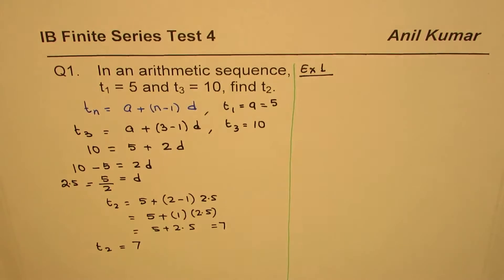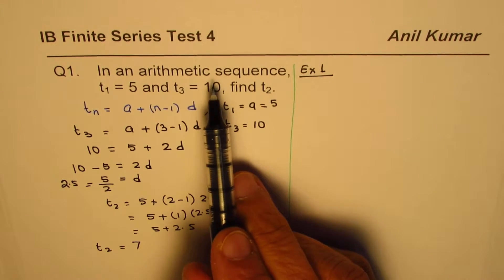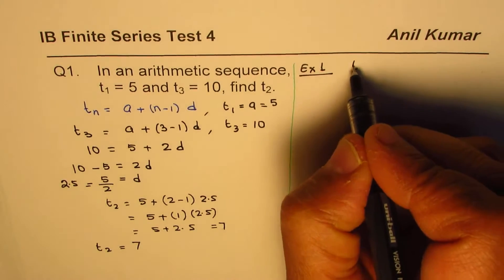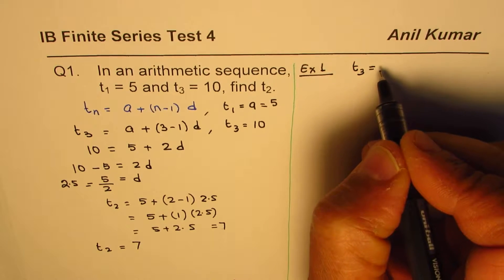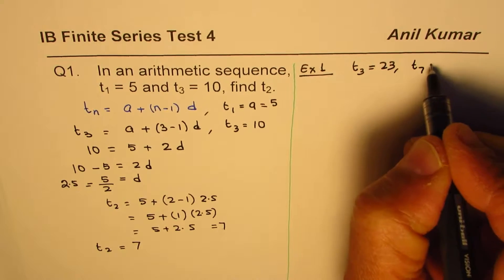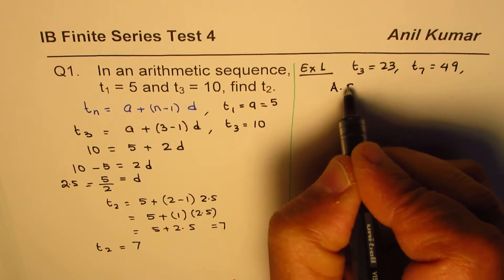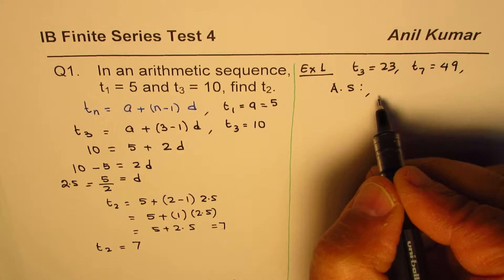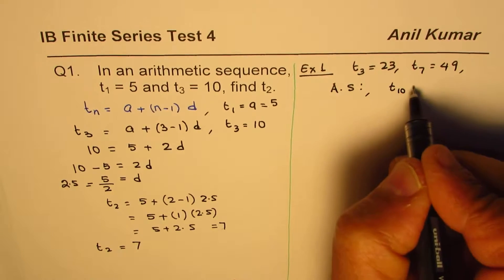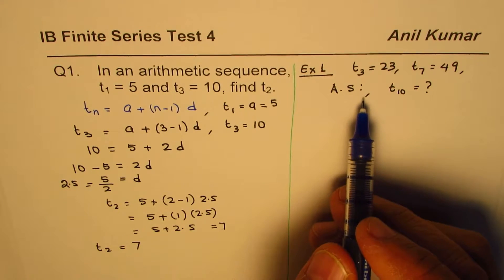Let me take another example to really practice, because that first one was simpler since we were given the first term. You may not always be given the first term — you may be given any two terms from the sequence. So let's take a general case: the third term is 23 and the seventh term is 49. We need to find the tenth term.